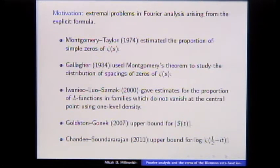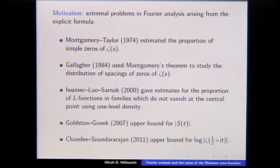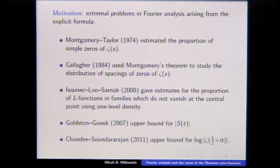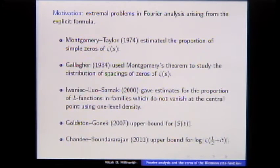These results boil down to an extremal problem in Fourier analysis: you use the explicit formula, you use number theory in some way, you have constraints, and then you want to solve optimally. There is some history of this in analytic number theory. In Montgomery's original paper on pair correlation he showed two-thirds of zeros are simple, and later reinvestigating with Taylor in 1974 he got the proportion up to about 67.25% using an optimal choice in his theorem.